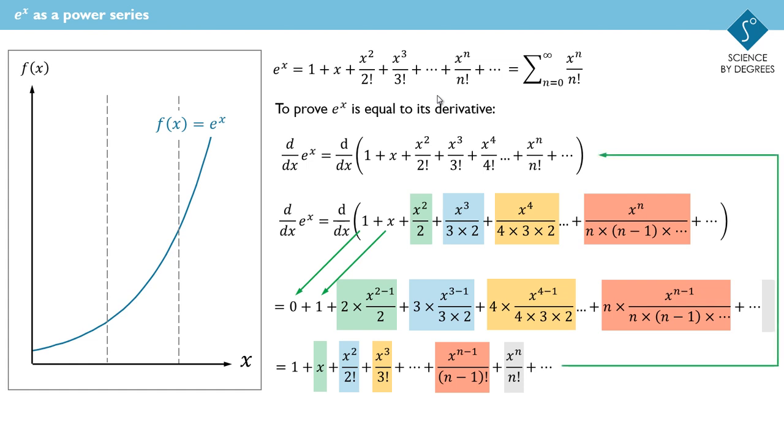And comparing that with the thing that we differentiated originally, you'll see that it is the same. What's happened is that each term in the sum, when differentiated, becomes equal to the previous term in the sum. And so we end up with the same sum. In other words, when we differentiate that sum, it becomes itself. And that justifies the use of the sum in being equal to e to the power of x.